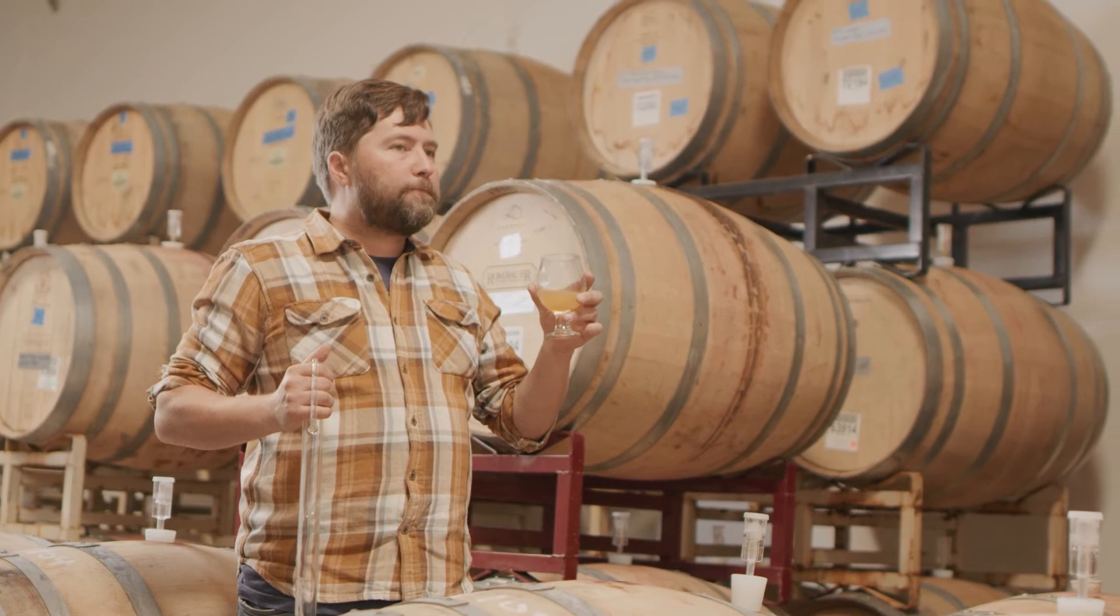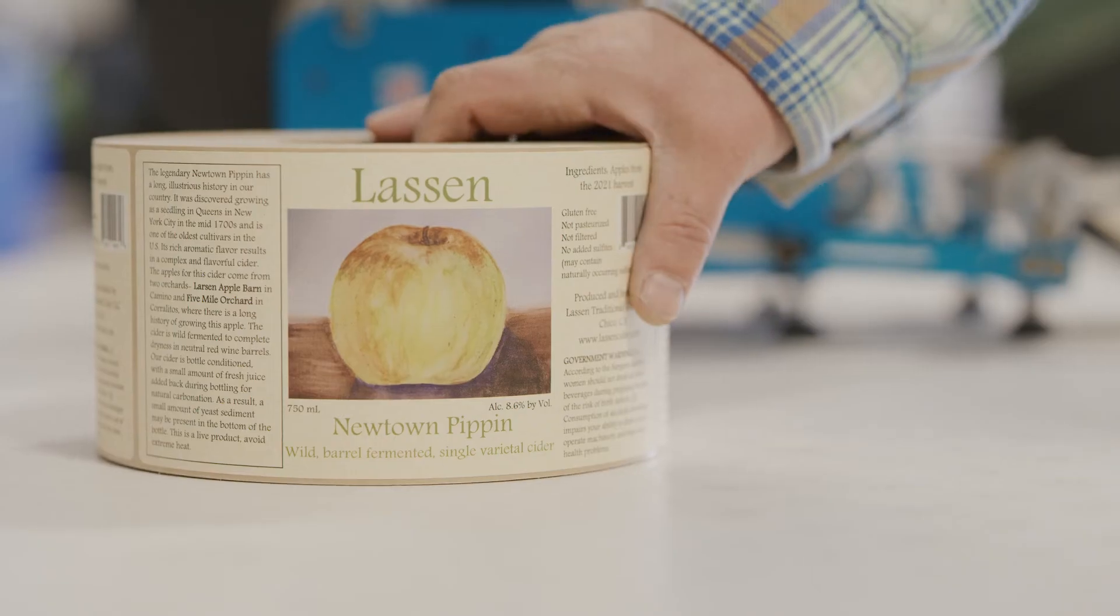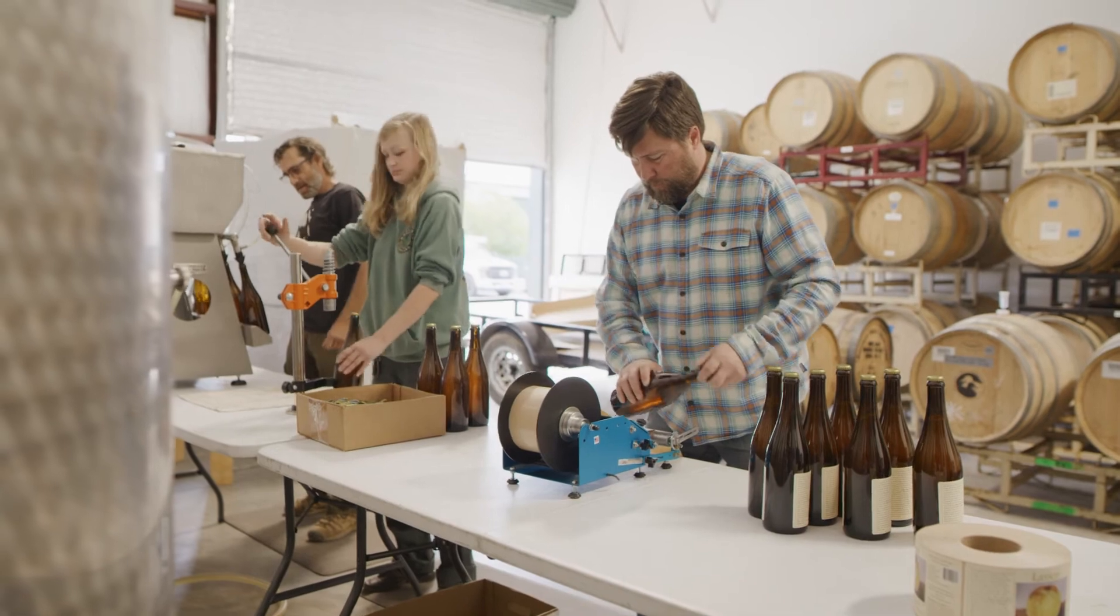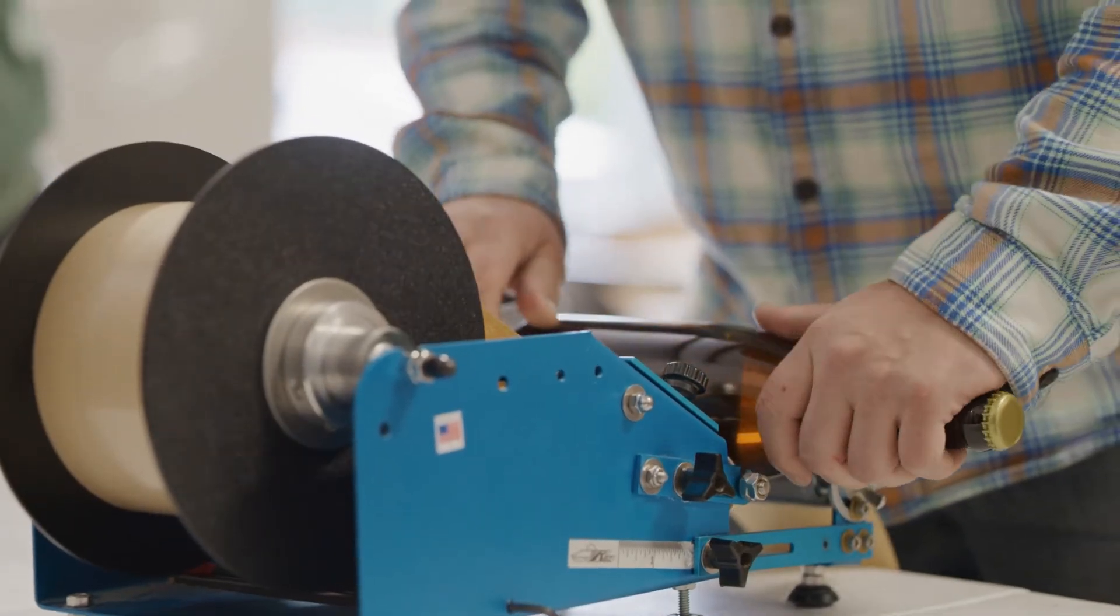The way I make cider is the hard way, the slow, traditional way where it takes five or six months from when you get apples until when it's ready to sell.